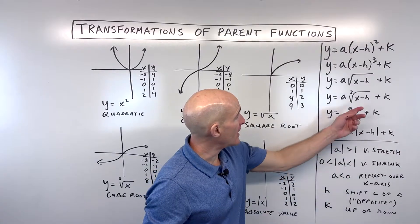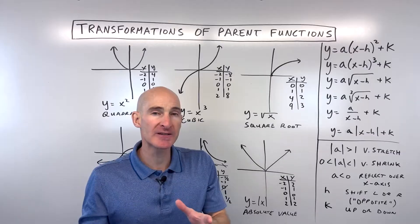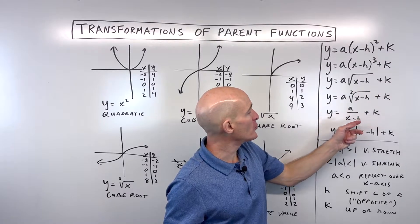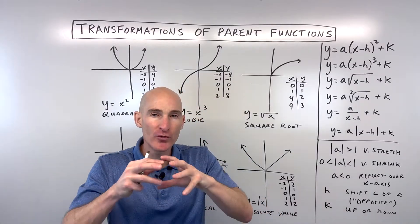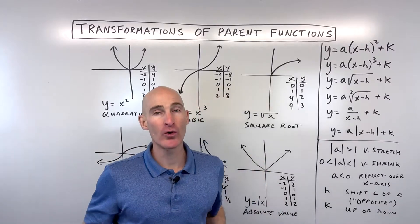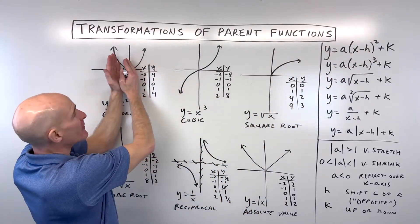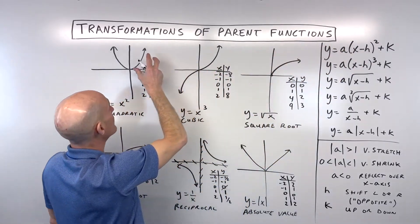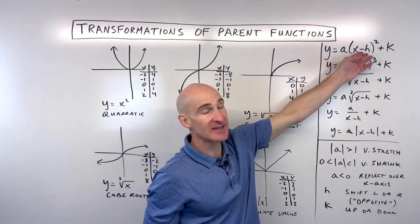The H value is the number grouped with the x — inside the parentheses, underneath the square root, in the denominator, or inside absolute value bars. It has the opposite effect: if it's x minus 1, we shift the graph positive 1 to the right. If it's x plus 1, we shift it negative 1 to the left. Whatever is grouped with the x has this opposite effect.